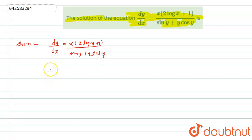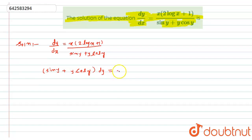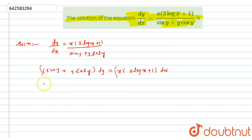I will do cross multiplication, so it will become (sin(y) + y·cos(y)) dy equals x(2log(x) + 1) dx.